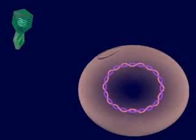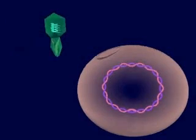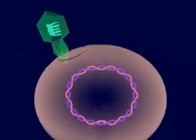In a lysogenic cycle, viral nucleic acid becomes part of the host cell's chromosome and is replicated with it. Eventually, the virus enters a lytic cycle and kills the host cells.